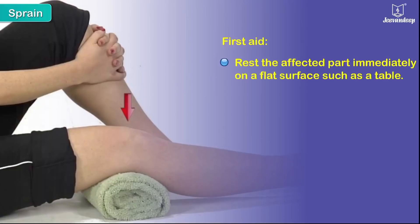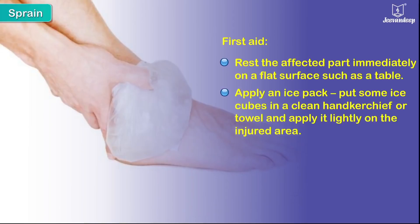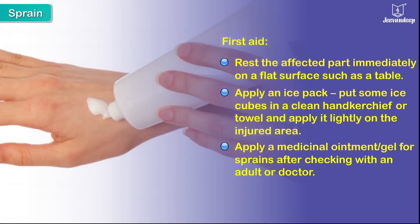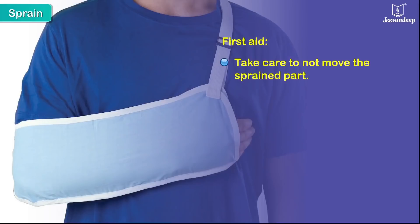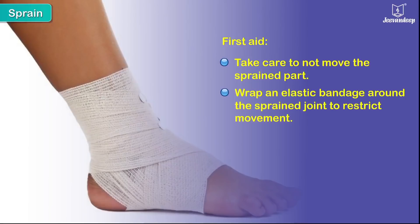First aid for a sprain — rest the affected part immediately on a flat surface, such as a table. Apply an ice pack: put some ice cubes in a clean handkerchief or towel and apply it lightly to the injured area. Apply a medicinal ointment or gel for sprains after checking with an adult or doctor. Take care not to move the sprained part. Wrap an elastic bandage around the sprained joint to restrict movement.